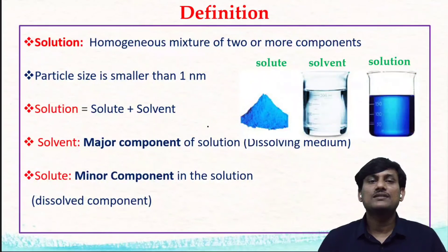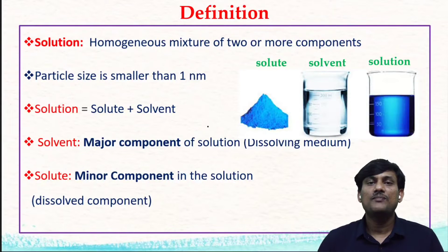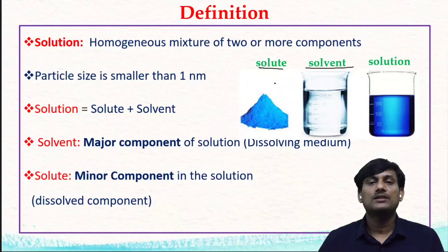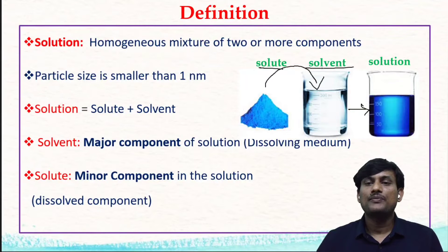We know that a solution is a homogeneous mixture of two or more than two components. In solutions, the particle size is less than 1 nanometer. A solution can be defined as a mixture of solute and solvent. When you add solute to the solvent, there is a formation of solution. The solvent is a dissolving medium in which solute can be dissolved.